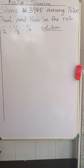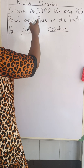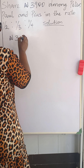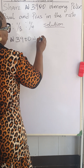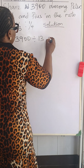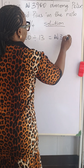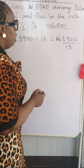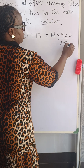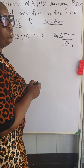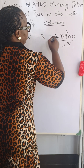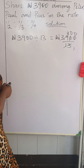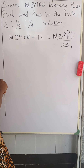We got thirteen after adding the parts, so we divide the three thousand nine hundred naira by thirteen. Writing it out: 3,900 divided by 13. Thirteen into thirteen is one, thirteen into thirty-nine is three, and into zero is zero. So each part is worth three hundred naira.